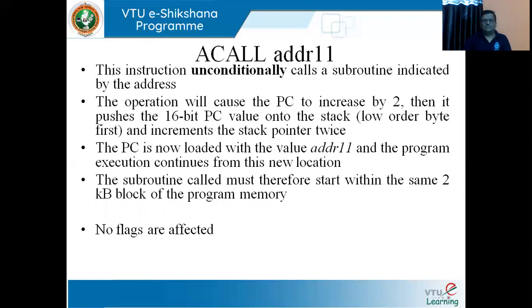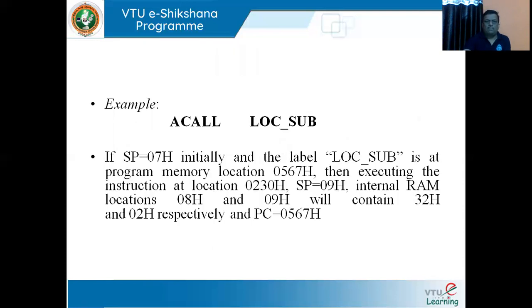For the ACALL example: the program counter increases by only 2, so the subroutine must start within the same 2-kilobyte block of program memory. Example: if SP has default value 07H and LOC_SUB is at program memory location 0567H, executing the instruction at location 0230H results in SP becoming 09H, internal RAM locations 08H and 09H containing 32H and 02H respectively, and PC becoming 0567H.